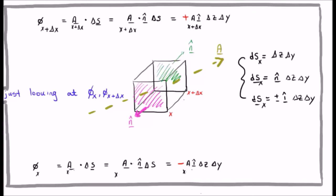Now let's see if we can contrast the flux at x equals x and the flux at x equals x plus delta x. The flux at x is at the bottom of your screen. Here we're looking at phi sub x which is a sub x dotted with the vector surface area element. So that's A dot n hat delta s but n hat in this particular case is minus i hat. So we have minus A i hat delta z delta y.